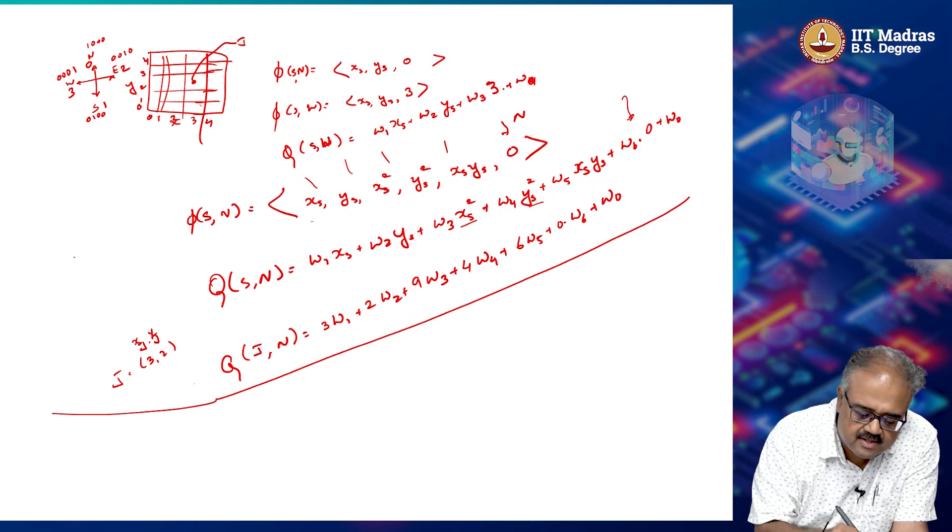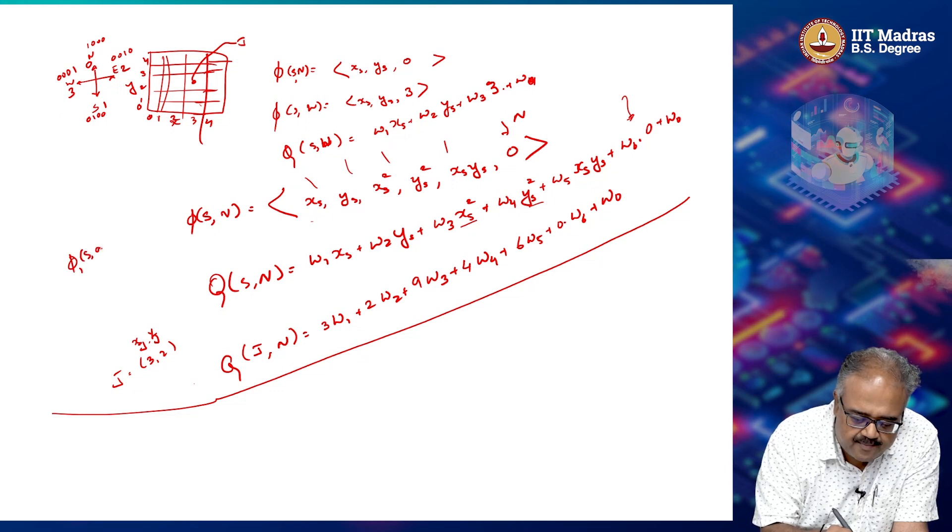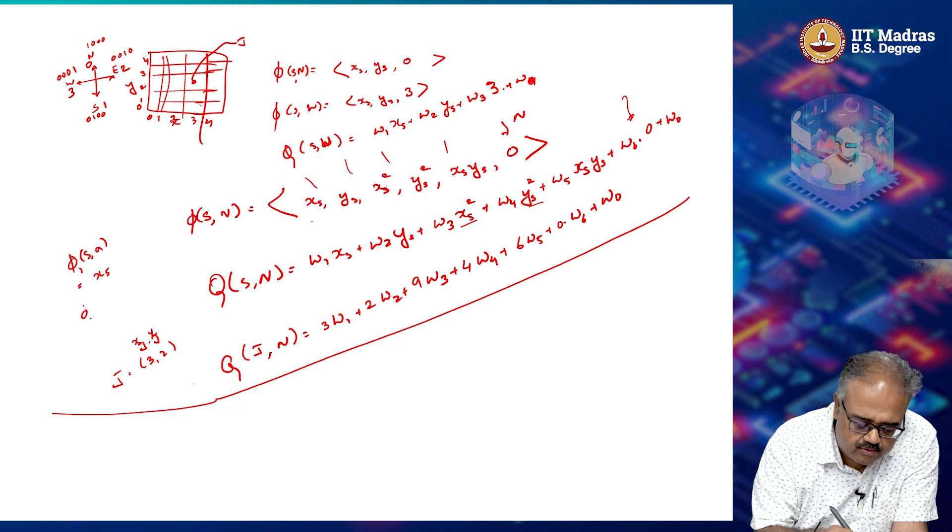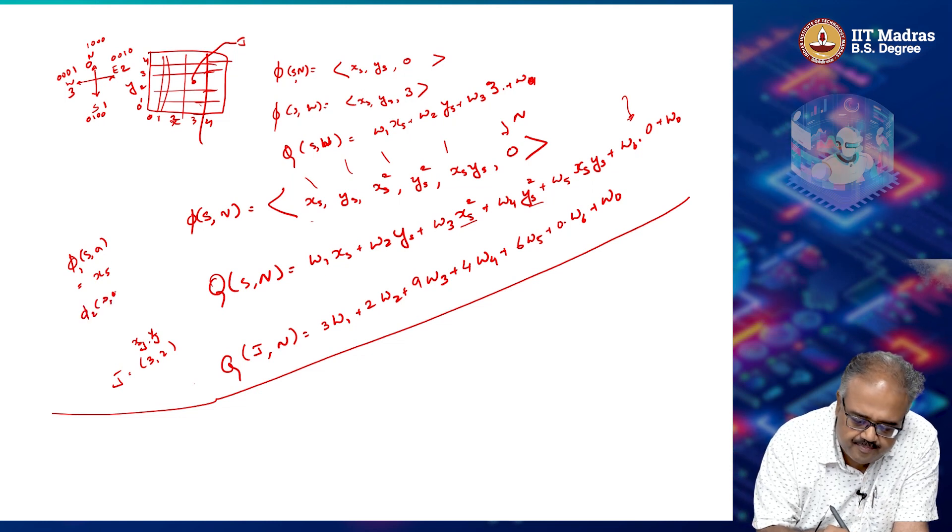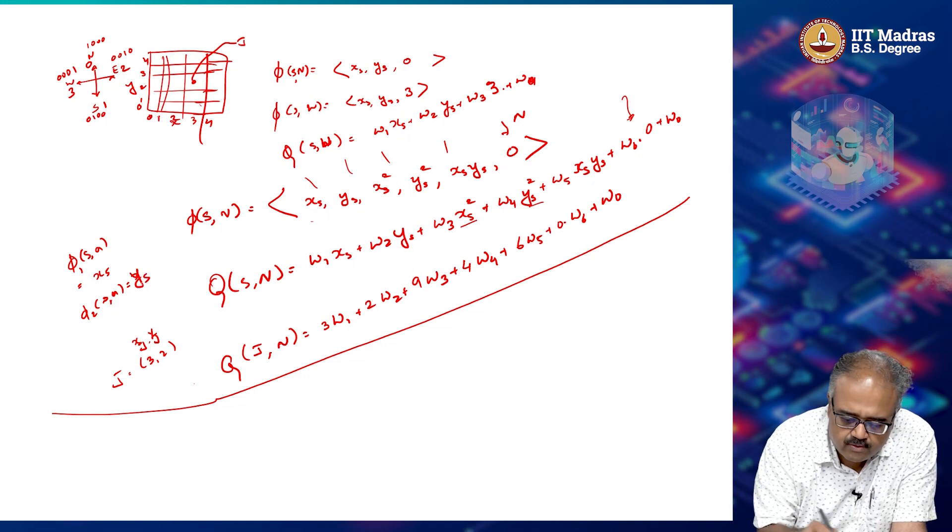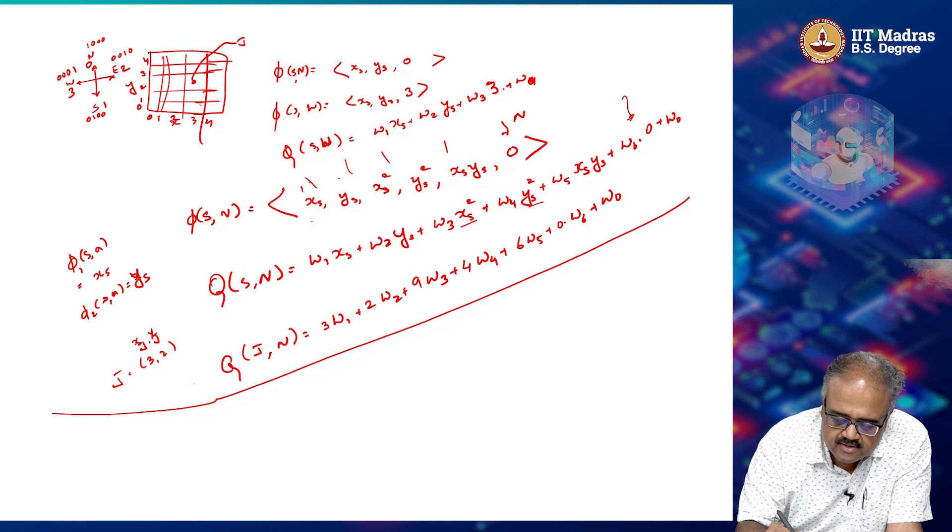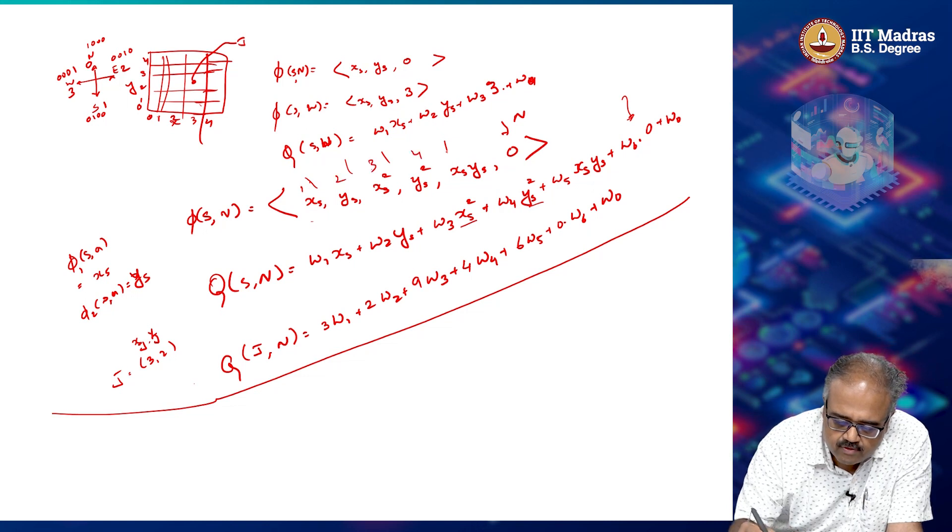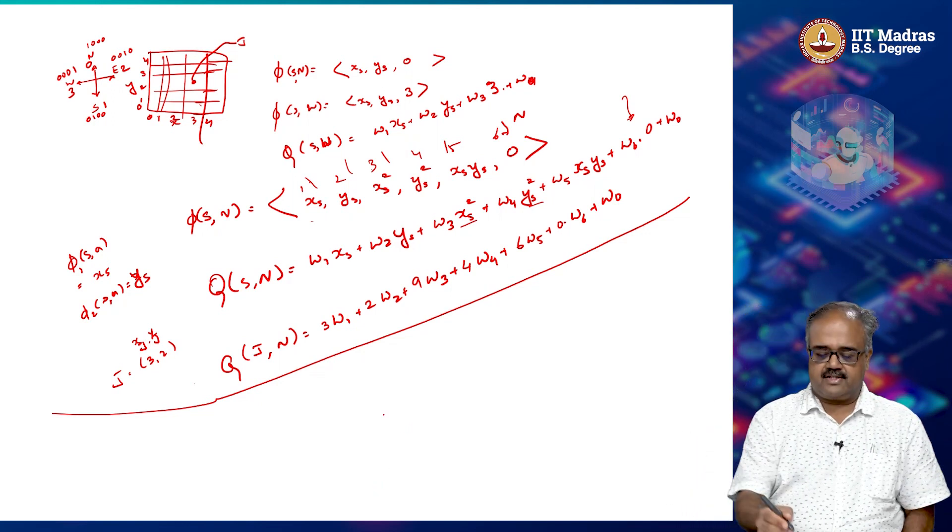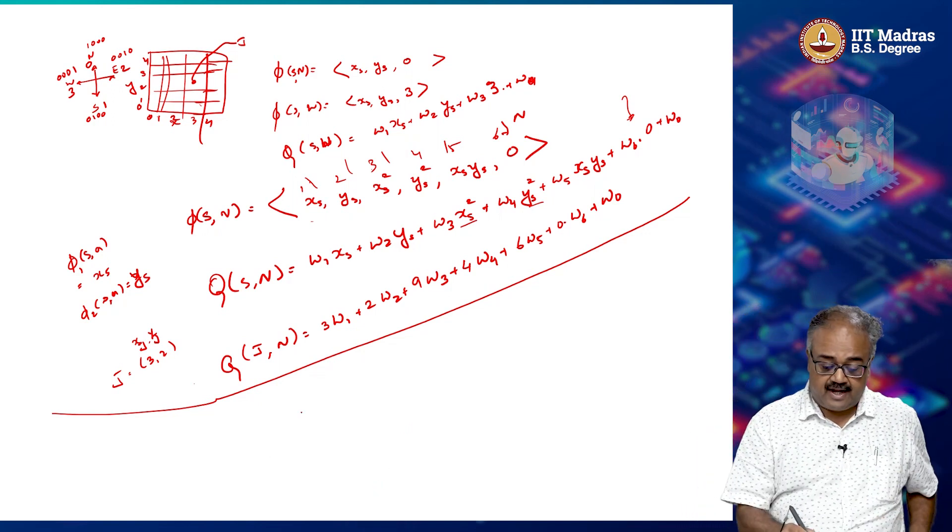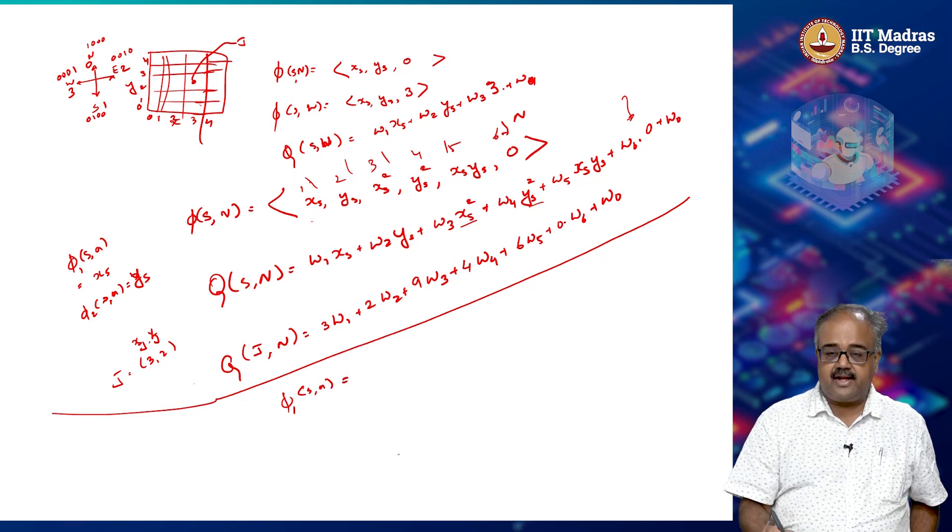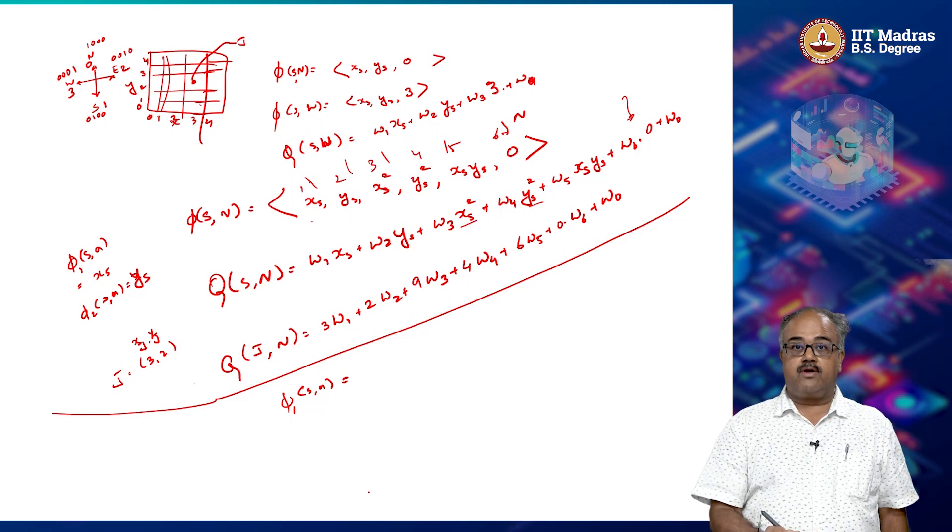So I can do things like, so let us call these, now these are phi 1, phi 2, things like this. So basically what I have done here is, phi 1 of s comma a is equal to x s, phi 2 of s comma a equal to y s. So that is basically how I am. So when I say phi 1, phi 2. So this is phi 1, this is phi 2, this is phi 3, phi 4, phi 5 and phi 6. So I could basically define a phi 1 of s comma a.